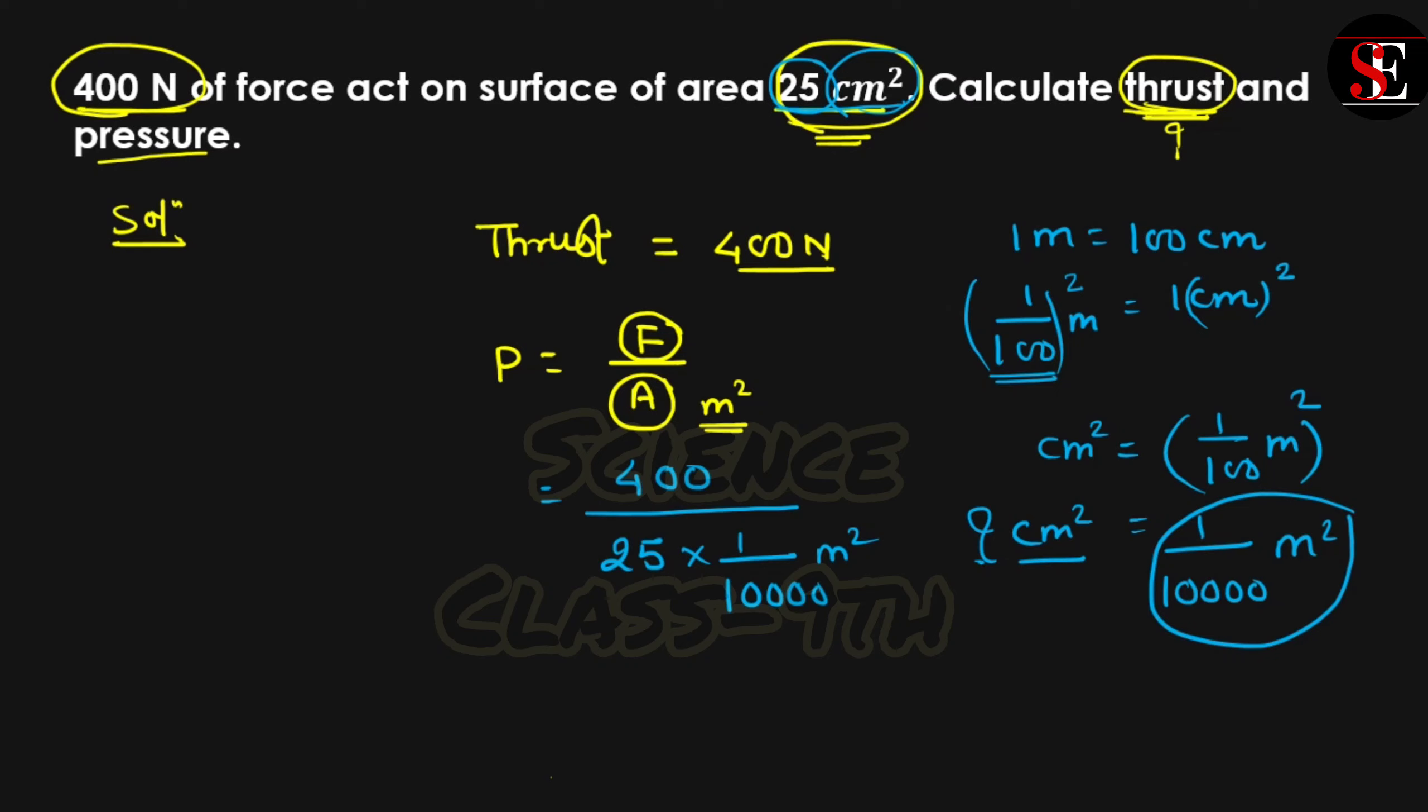We solve this one. This 10,000 comes on top. So 400 × 10,000 divided by 25 equals 16,0000 divided by 25.